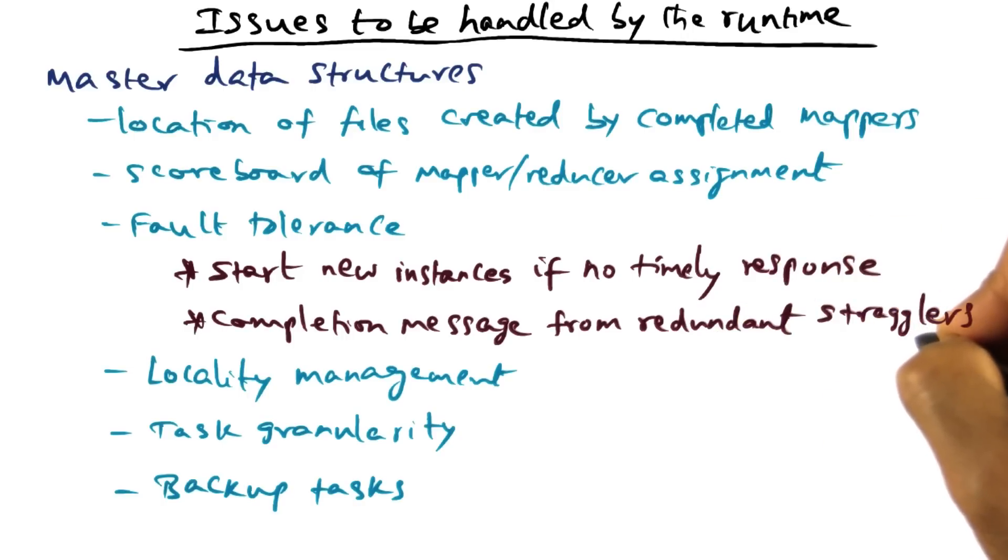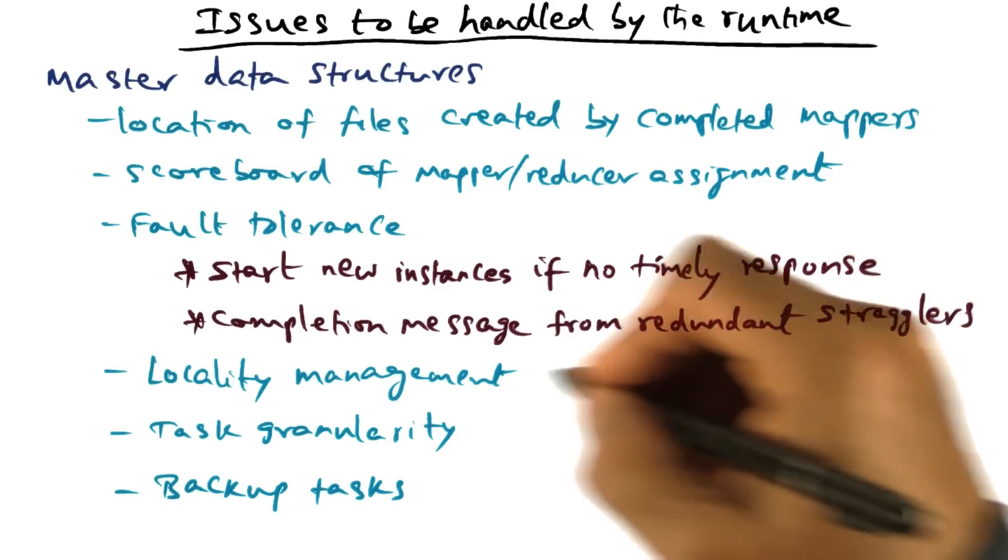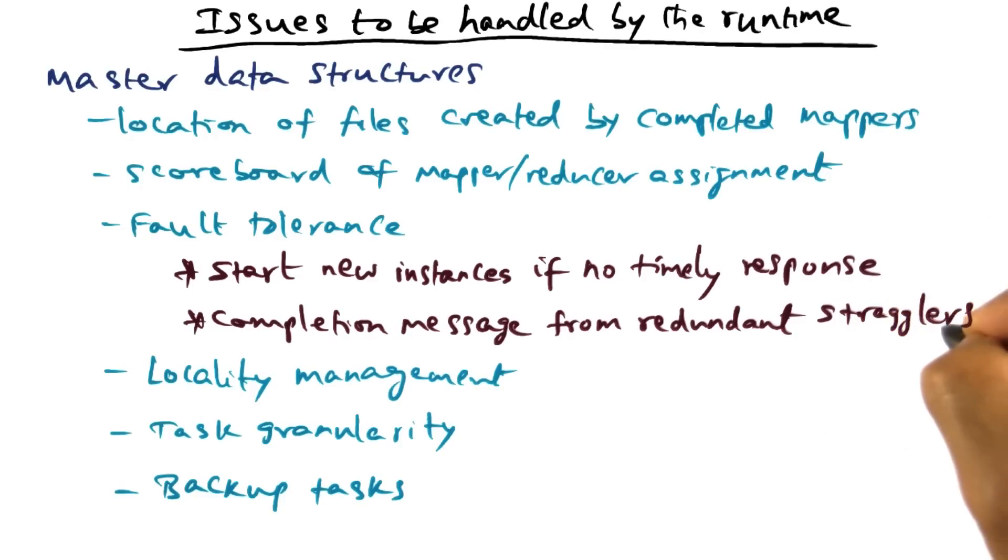And this is where it can get rid of redundant stragglers who come along later and say, I produce the same output file for the same split. Master will say, I've already got it, I don't need this, and it can ignore the completion message from that redundant straggler.